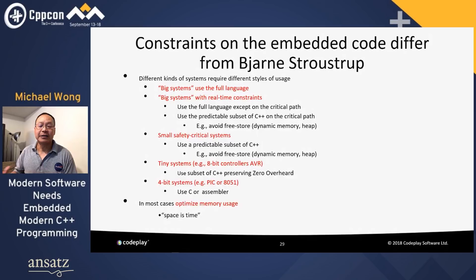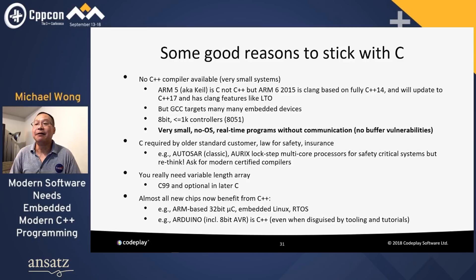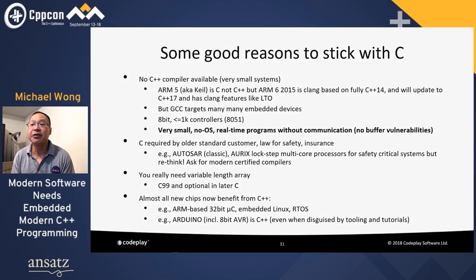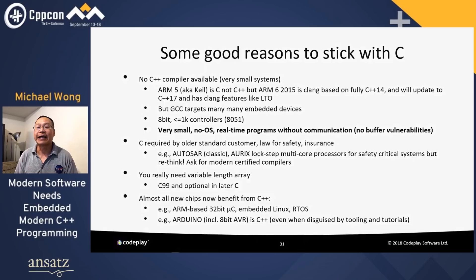That completes the first act. The second act is a practical handbook on how to change from C to C++ and why. There are some good reasons to stick with C — I'm not bashing C. You might have no C++ compiler available, which is probably the case in very small systems, but even those are beginning to come with C++ compilers. ARM 6 in 2015 is Clang-based and fully C++14. GCC obviously targets many embedded devices. Very small, no-OS, real-time programs without communications might be the case.